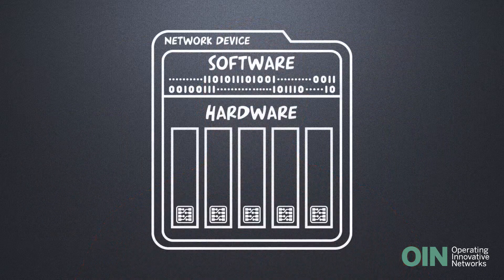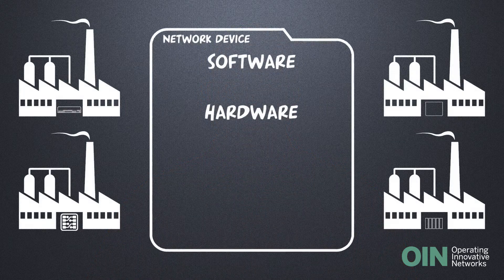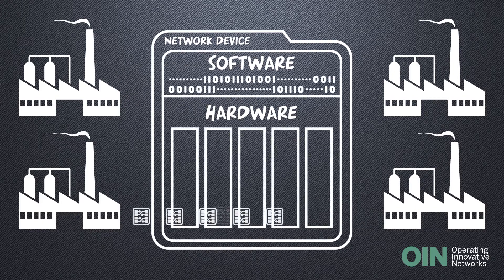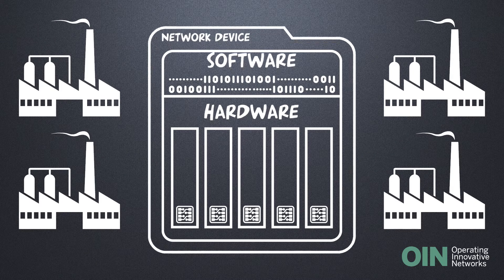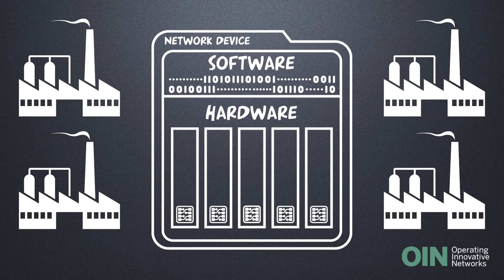To make networking devices more versatile and customizable, vendors began to separate the device components, disaggregating them. In network disaggregation, also called white box networking, components of each device — such as software, hardware, and chipset — are available separately through different vendors. Buyers can pick and choose the networking device's components, customizing each device to fit the buyer's needs.